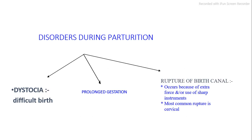Disorders during parturition. Dystocia refers to difficult birth. Rupture of the birth canal occurs because of extra force and/or use of sharp instruments; the most common rupture is cervical. Prolonged gestation is also a disorder during parturition.